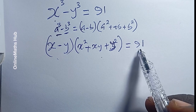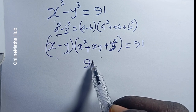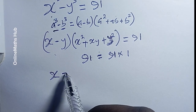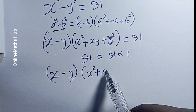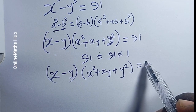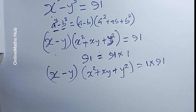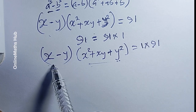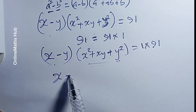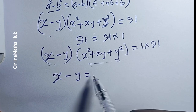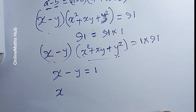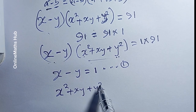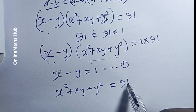We've expanded the left-hand side and now need to expand the right-hand side. Because 99 is a prime number, we can only write it as a product of itself and 1. So we have (x minus y) multiplied by (x² plus xy plus y²) equal to 1 multiplied by 91. The second bracket is bigger than the first.